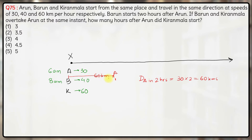Time taken by Barun to catch Arun will be the relative distance between them — 60 — divided by their relative speed, which is 40 minus 30. So 40 minus 30 is 10, which gives 6 hours.